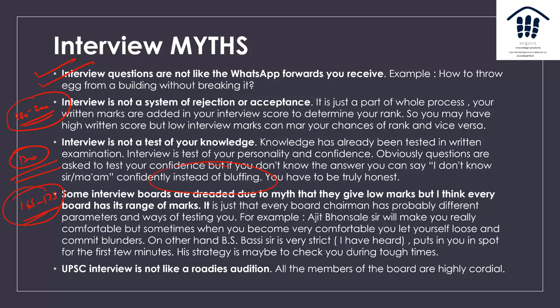For example, a boss-lesser type interviewer will make you very comfortable, but so comfortable that you might lose yourself and commit blunders. On the other hand, Mr. Basri is very strict — he will put you on the spot in the first few minutes to check your mental toughness. It is not a Roadies interview — they are very cordial, and even if they are rebuking you, it will be done in a very cordial way.